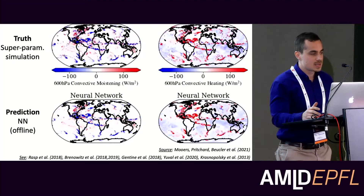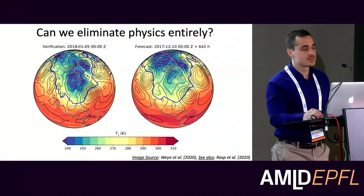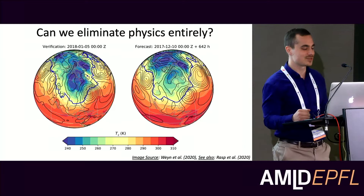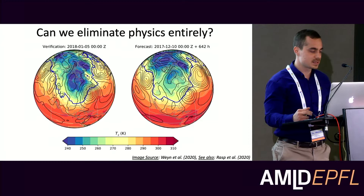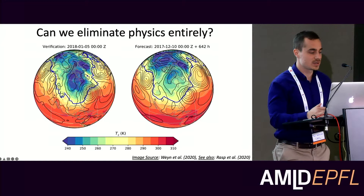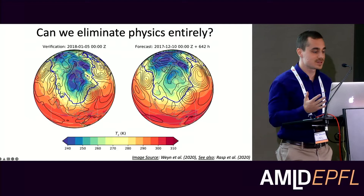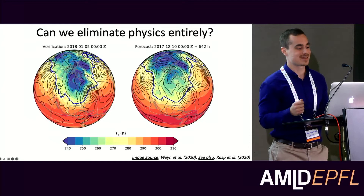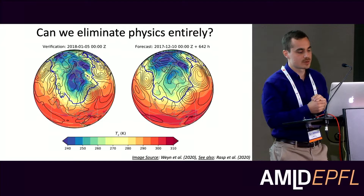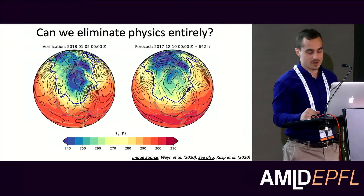Neural networks have really permeated atmospheric science. I'm showing an example from numerical weather prediction by Jonathan Wayne, now at Microsoft, who keeps improving his data-driven weather prediction model. He's able to forecast near-surface temperature up to a month in advance without using any physical model — except for training, of course. He got rid of the dynamical core entirely, making a purely data-driven weather prediction. This raises a provocative question: can we eliminate physics entirely — can we avoid explicitly encoding physical knowledge in our algorithms, knowing we'll still need a physical model for training?